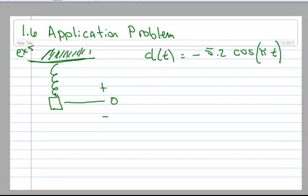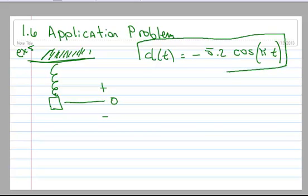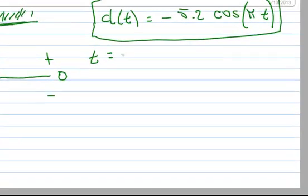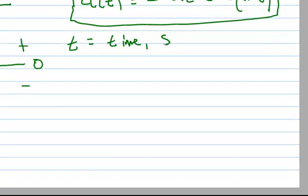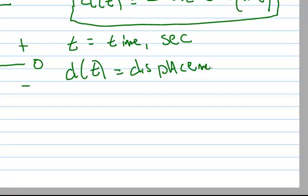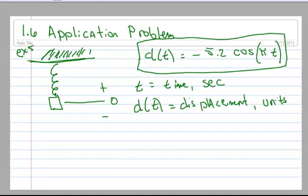And the function or the action of the spring is given by this equation here, where t is time, and the time is in seconds, and d of t, that's function notation, and that's given as displacement. And displacement is a physics term that means distance. And I think in this case, is it inches or is it centimeters or units? I'm not sure. I'll just call it units.